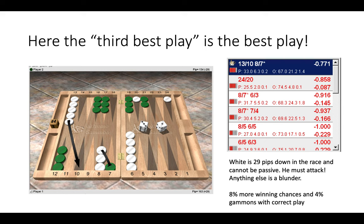By hitting and making the right play, we have 8% more game winning chances and 4% extra gammons. So use the 12-second delay on your clock, use a little bit of time. It's not speed backgammon. When you see the 20 point, when you see the five point, ask yourself have you missed something else. Here the third best play is actually the best play.